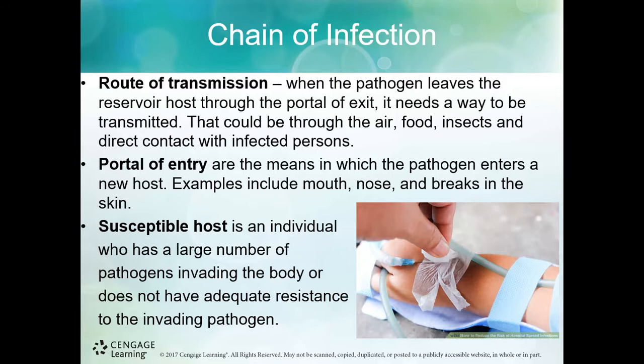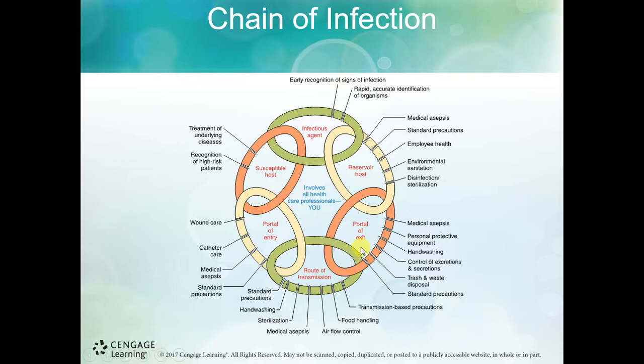There is a portal of entry — how the pathogen enters a new host. That new host is typically a susceptible host, someone who does not have adequate resistance to the invading pathogen. Look at the links in the chain, but also look at the exterior of the chain for ways to break it and stop the spread of infection.